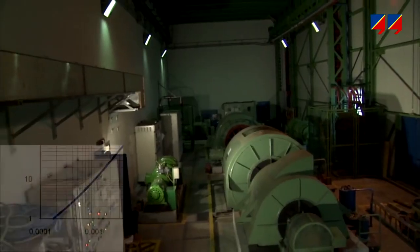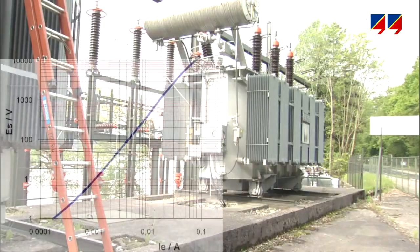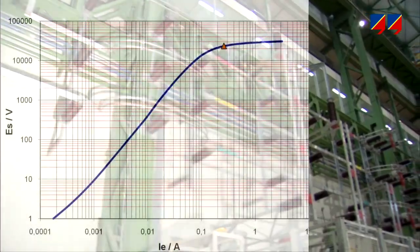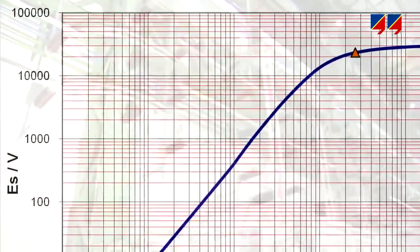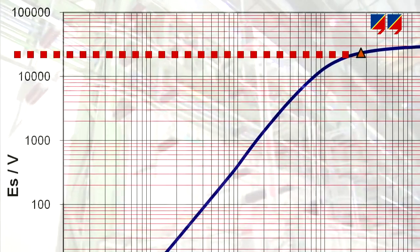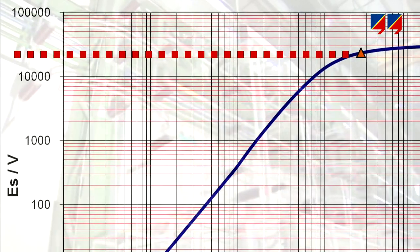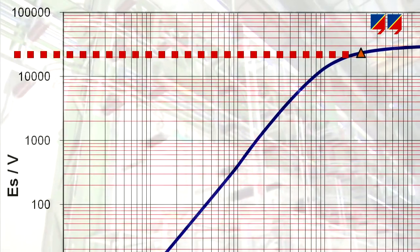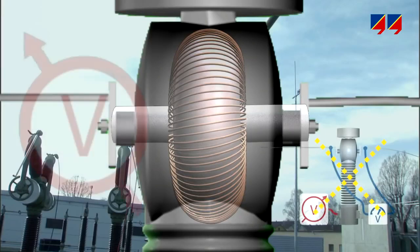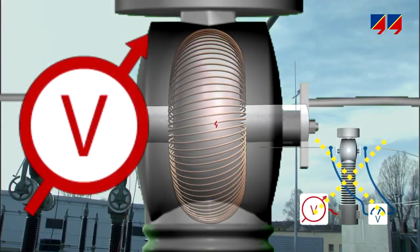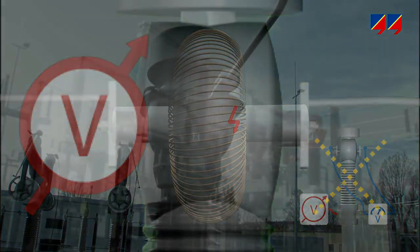In generator, transformer, or bus bar differential protection systems, CTs with knee point voltages of several thousand volts are used. These CTs cannot be tested with this method, since applying more than 4 kV to the CT's secondary winding would damage its insulation.